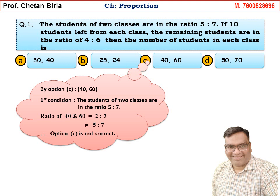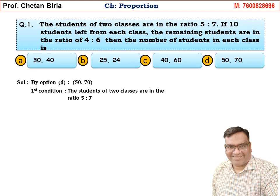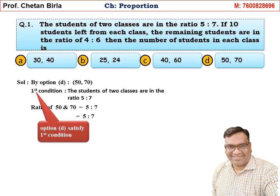No need to check further in the exam, but let's verify Option D anyway. Option D gives 50 and 70 students. The first condition is the students of 2 classes are in the ratio 5 is to 7. The ratio of 50 and 70 is 5 is to 7 — satisfied! So Option D satisfies the first condition.